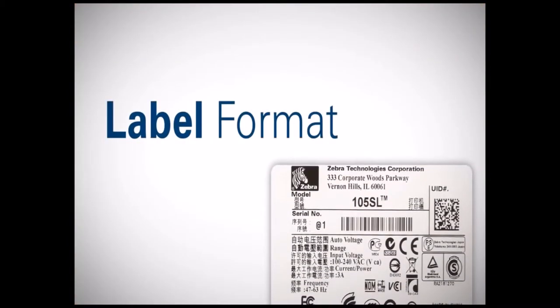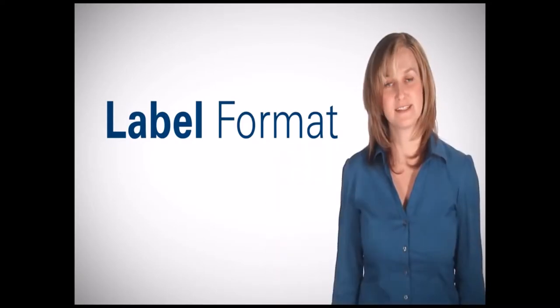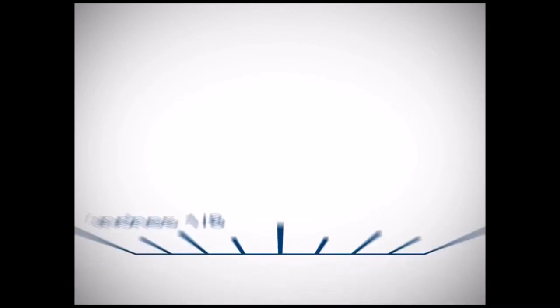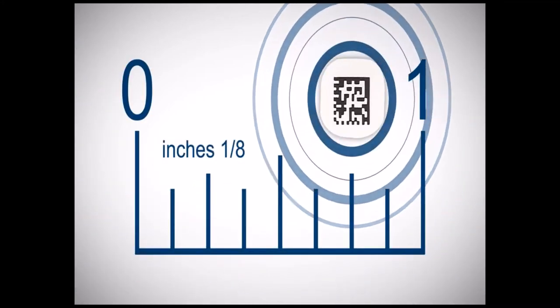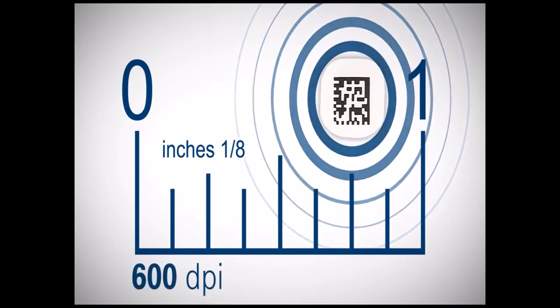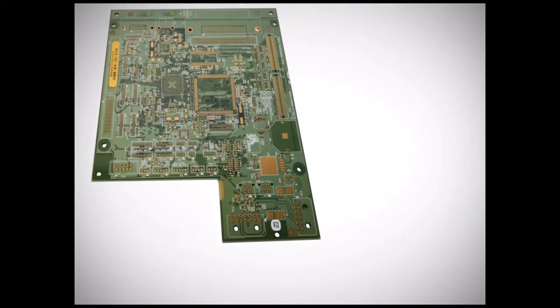The size of the label and text as well as the type of text and images are very important to consider when choosing the best DPI for the application. If the label size is smaller than a half inch wide and one inch long, a 600 dpi printer is required to print crisp and readable text, images, and barcodes, such as a circuit board label.